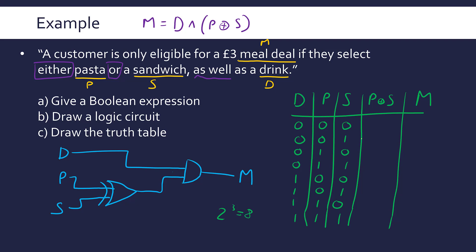Now let's fill in the P XOR S column. 0 XOR 0 is 0. 0 XOR 1 is 1. 1 XOR 0 is 1. But 1 XOR 1 is not 1 like regular OR would give — it's 0. Repeating for the next four rows: 0 XOR 0 is 0, 0 XOR 1 is 1, 1 XOR 0 is 1, and 1 XOR 1 is again 0.